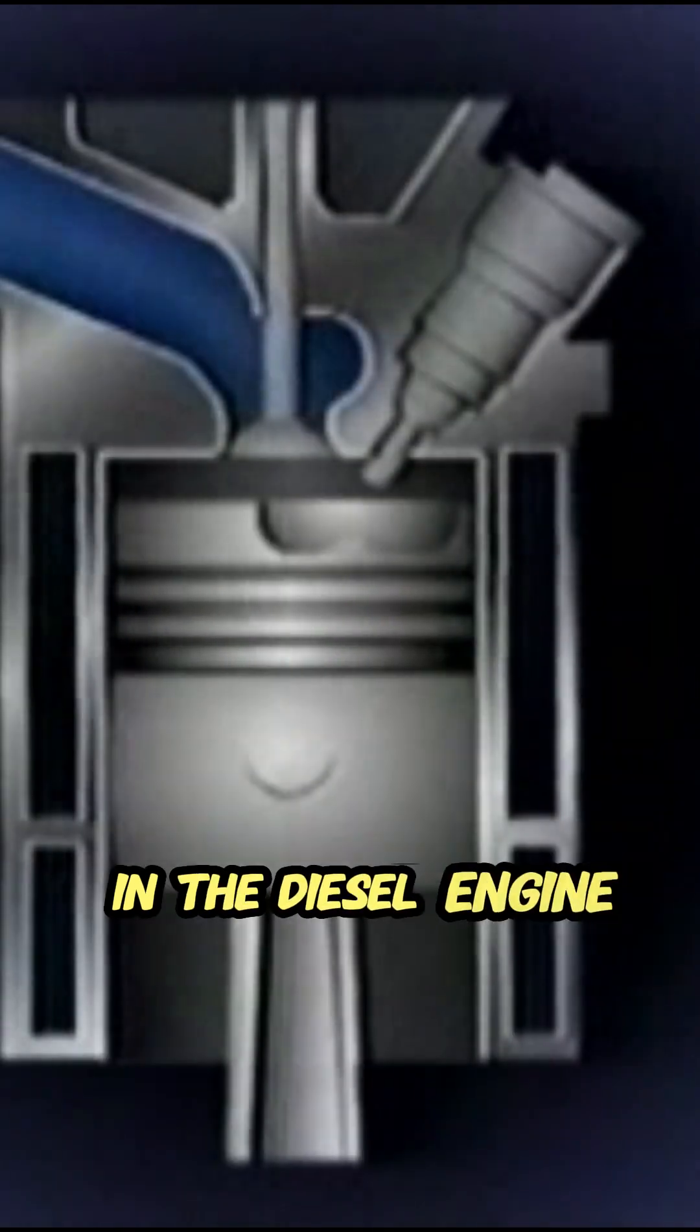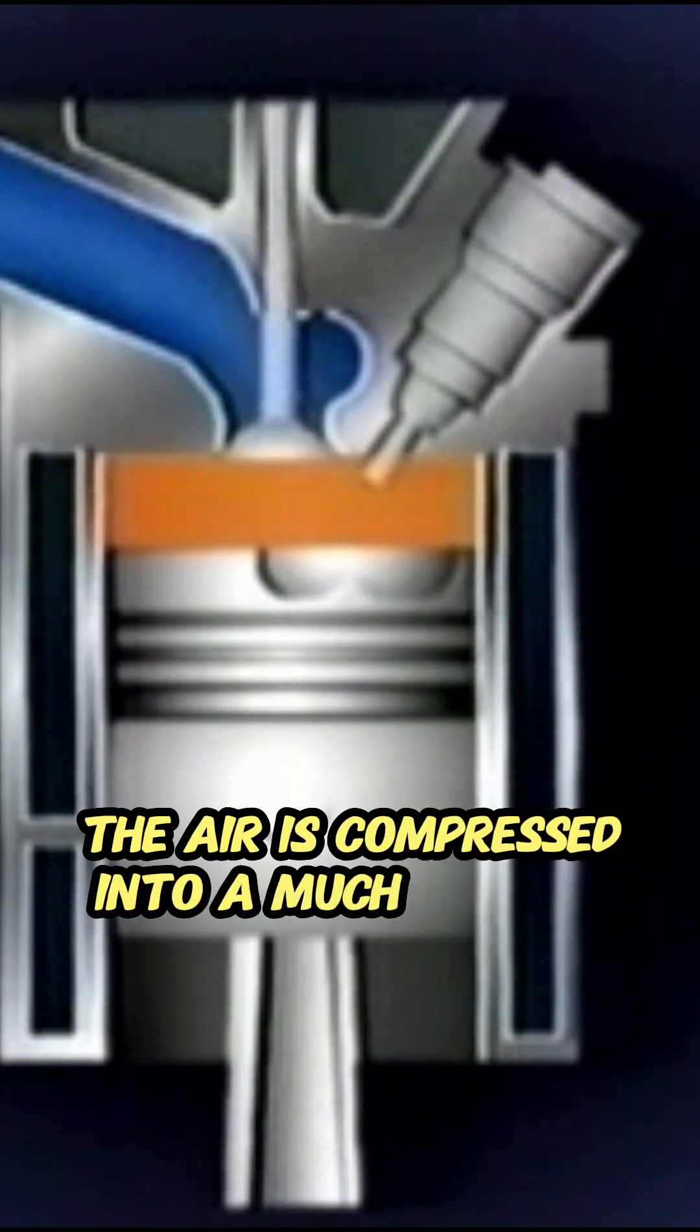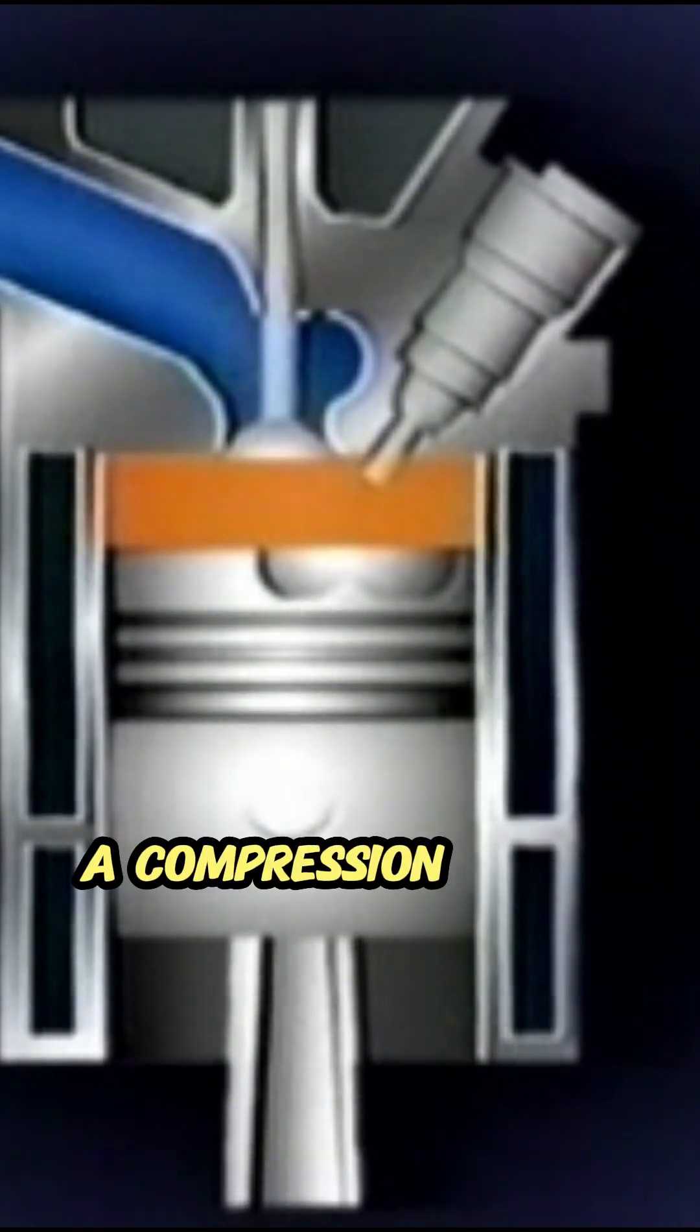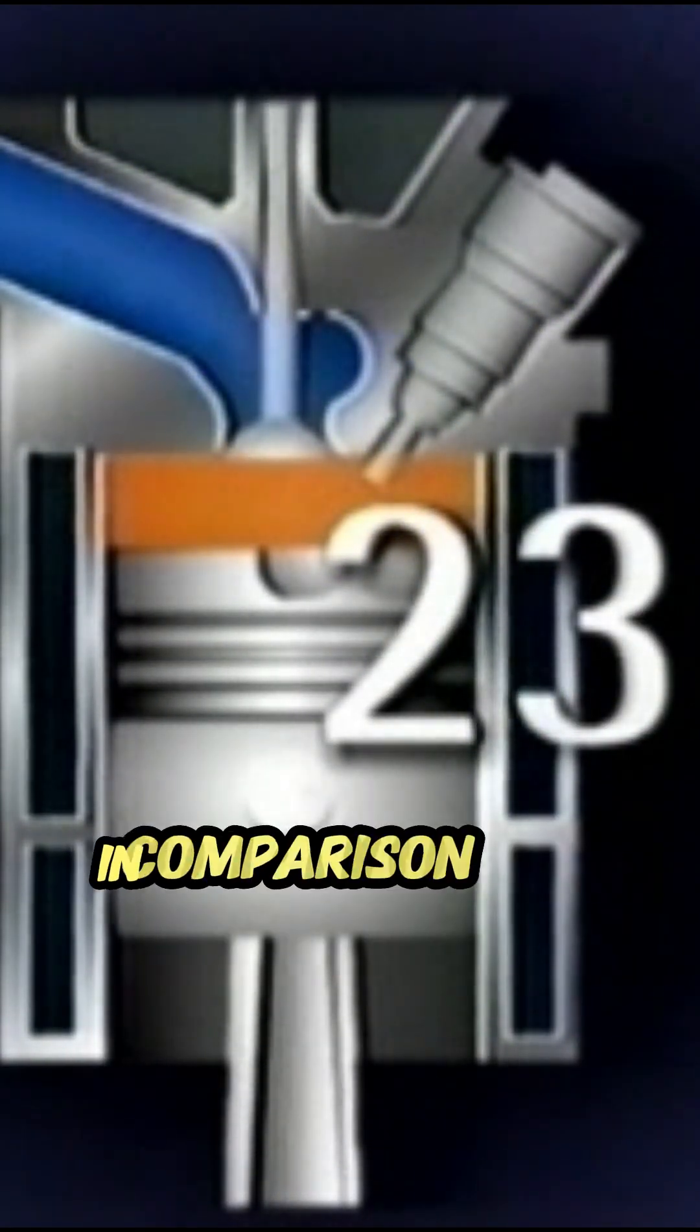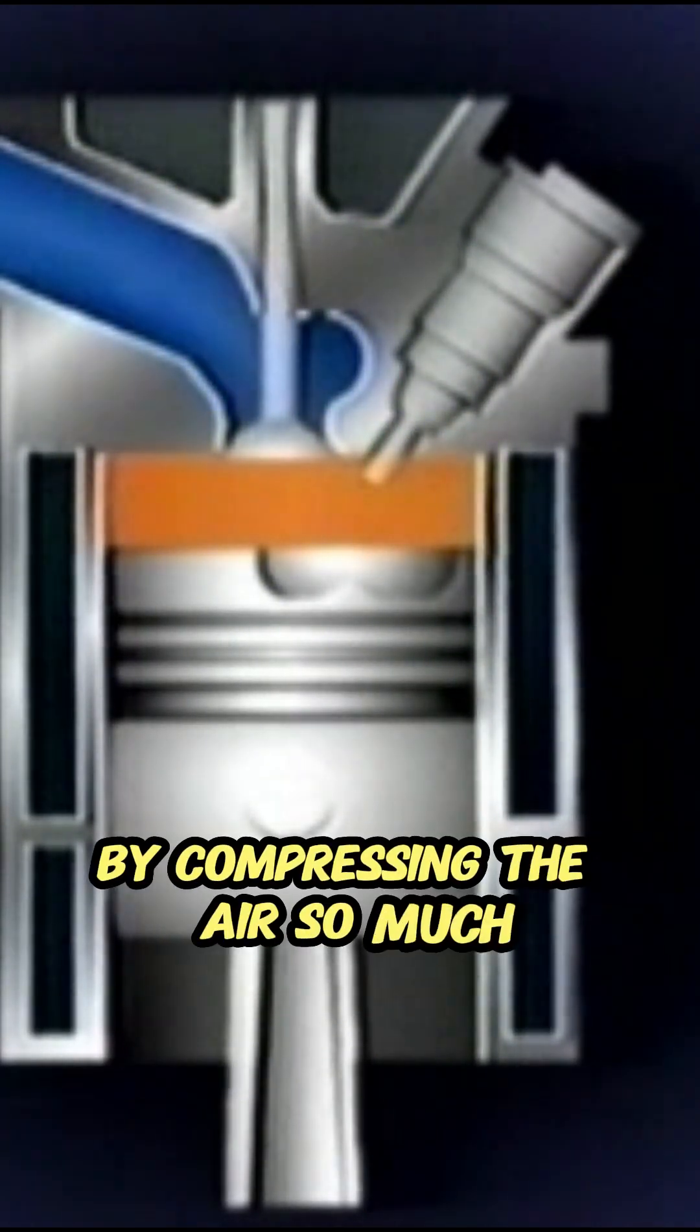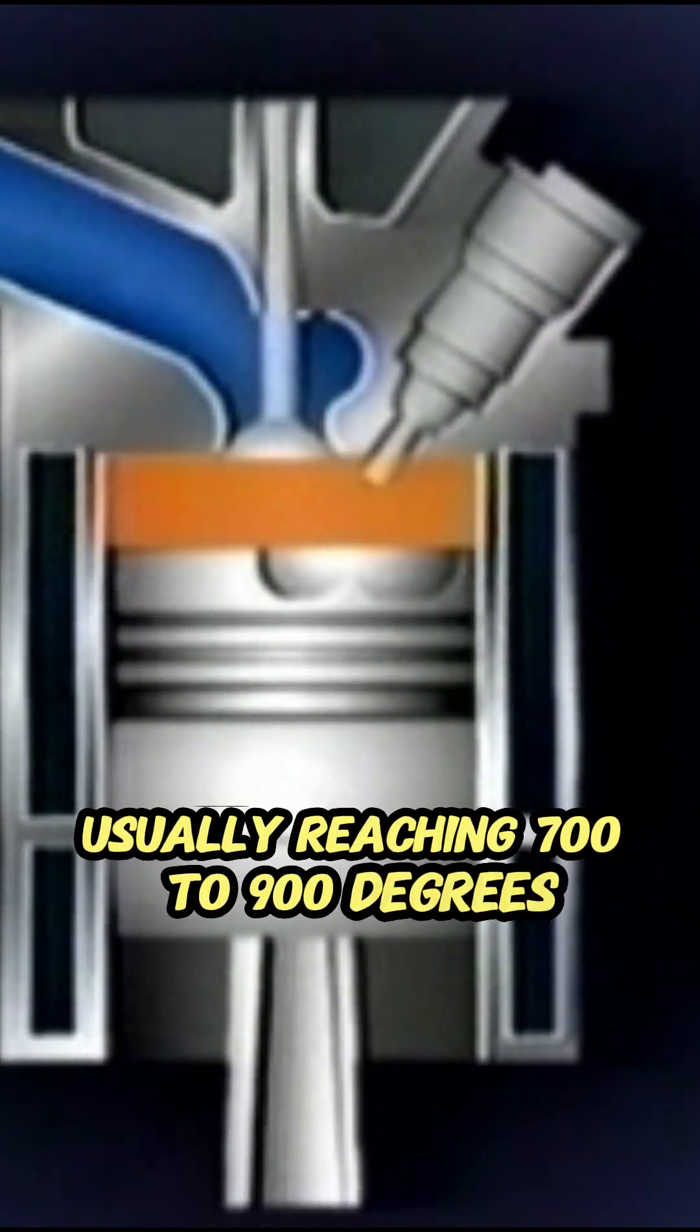In the diesel engine, only filtered air enters the cylinders. The air is compressed into a much smaller space. A compression ratio of 23:1 is quite normal for a diesel in comparison with, say, 9:1 for a petrol engine. By compressing the air so much, it becomes hot, usually reaching 700 to 900 degrees Celsius.